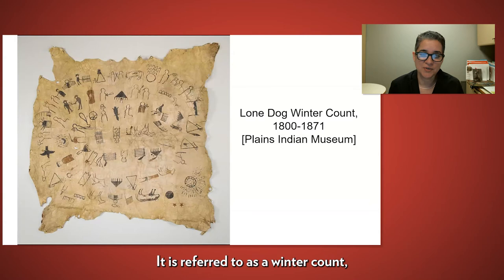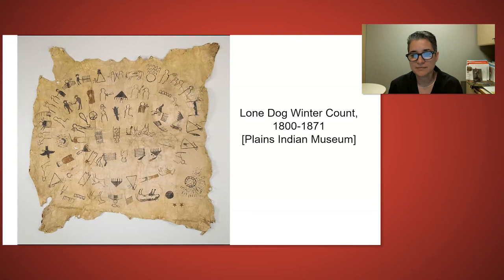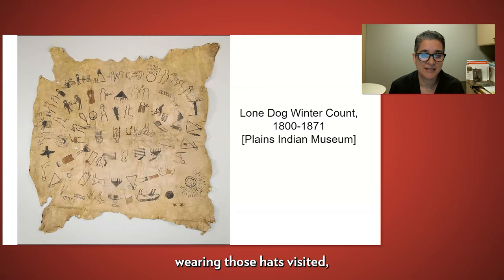It is referred to as a winter count because winter was the season used to measure the passing of a year. Whatever important event happened that year would be indicated with a single drawing. For example, a figure with a hat might represent a year that white men wearing these hats visited, or a drawing of several stars could be the year there were meteor showers or a large comet in the sky.